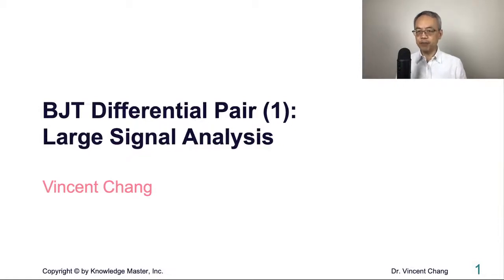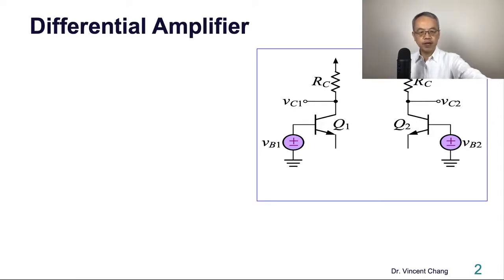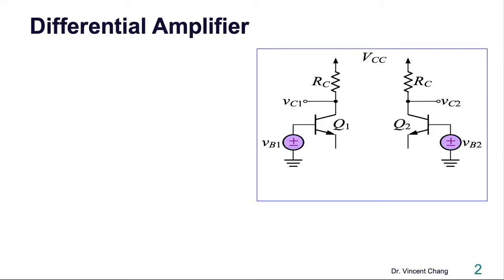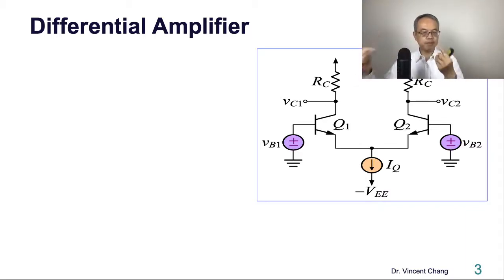BJT Differential Pair Part 1: Large Signal Analysis. Here is the differential pair, or differential amplifier. The two matched bipolar junction transistors and two collector resistances, emitter direct-coupled and biased by a constant current source IQ.